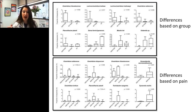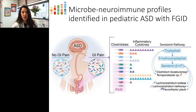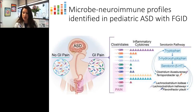The organisms significantly different between groups included several Clostridium species as well as Lachnospiraceae, and Clostridium bolteae — originally discovered by Finegold. Organisms most closely associated with pain, particularly in the ASD group, also implicated multiple Clostridiales. We saw clear separation between ASD and neurotypical groups, identifying a distinct microbial-neuroimmune profile in ASD individuals with functional GI disorders, and were also able to differentiate within the ASD group based on the presence of abdominal pain. Many of these organisms were associated with the serotonin pathway and correlated with multiple inflammatory cytokines.